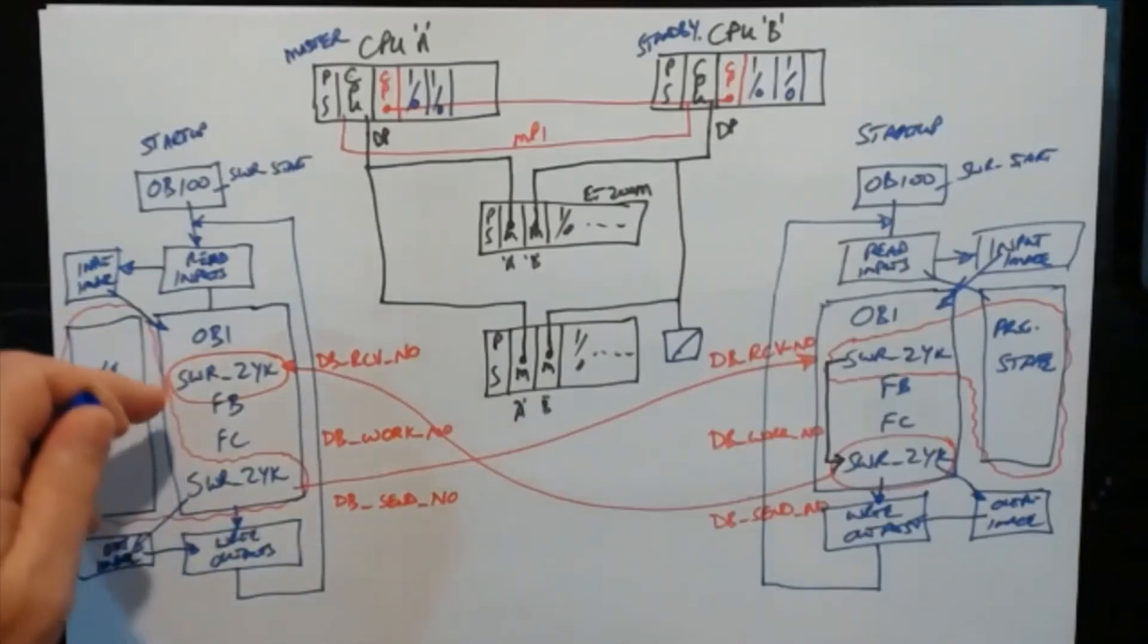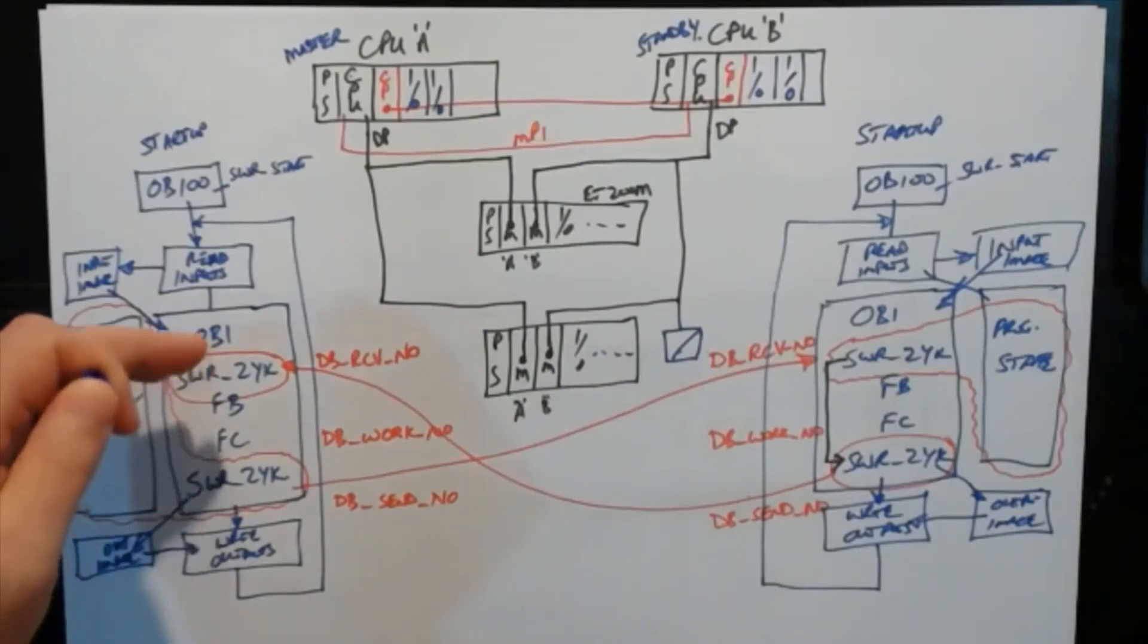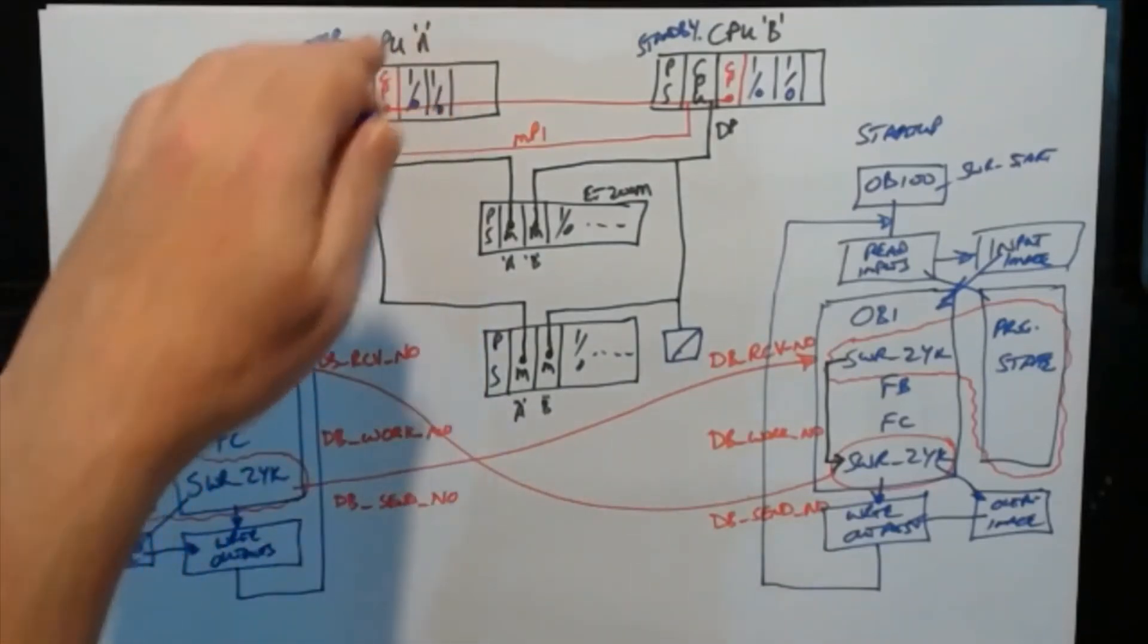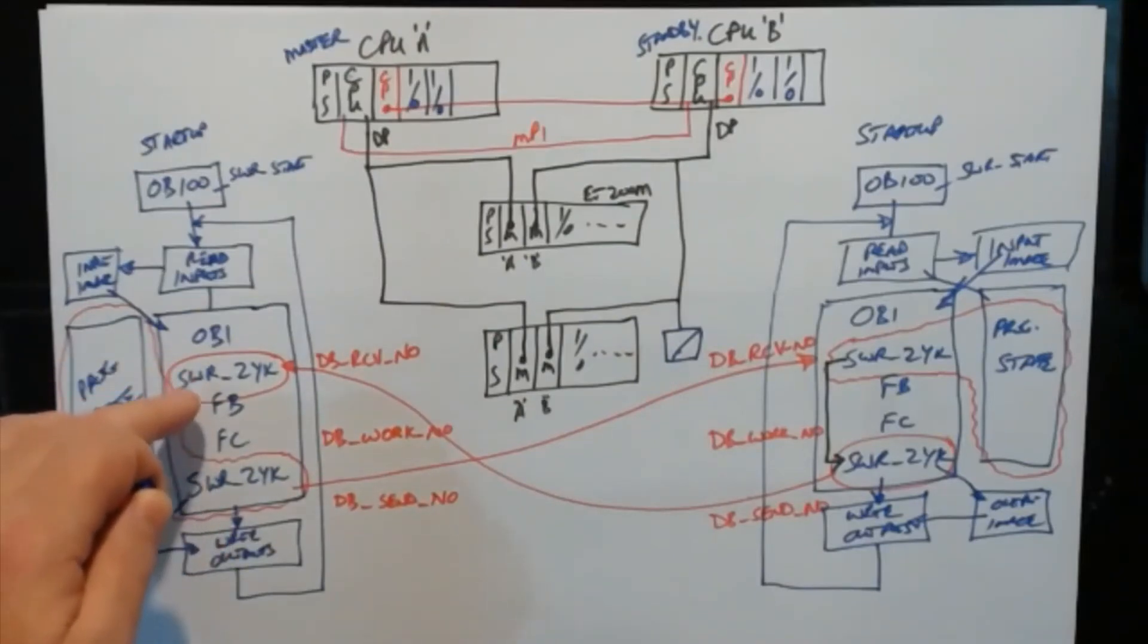OB1 will then call other parts of the program as well to do its own work on its own IO and its own instruments, separate from the redundant program.